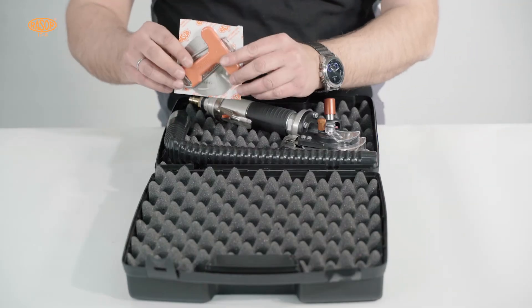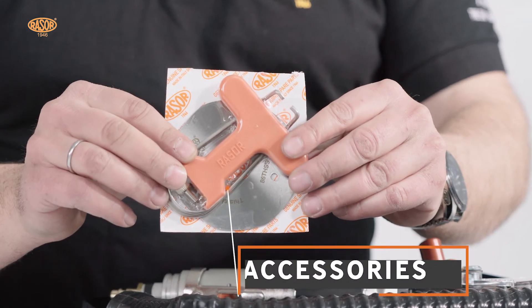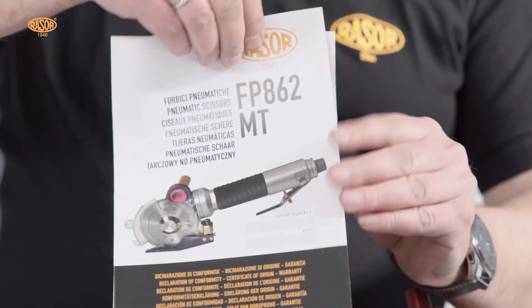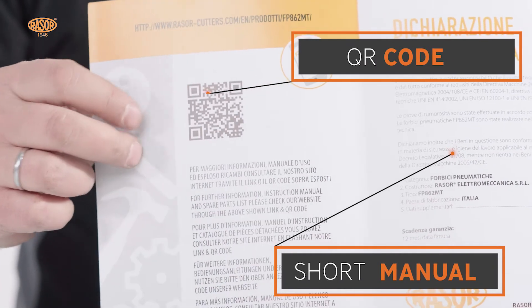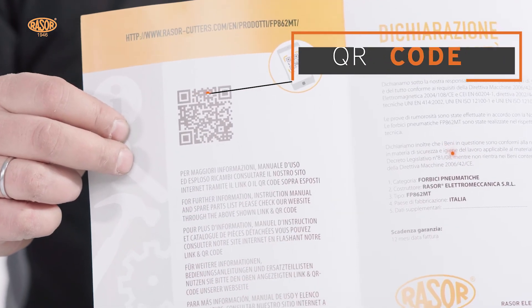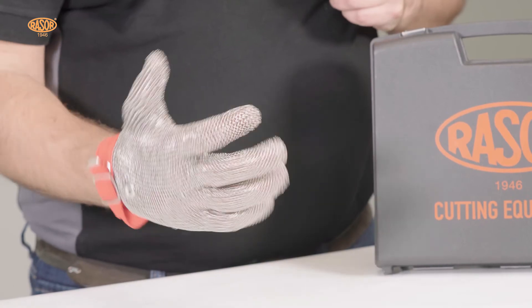The delivery contains the FP862MT, an extra blade, accessories, and the CE declaration with QR code for technical documentation download. The use of the Steel Protective Glove is mandatory.